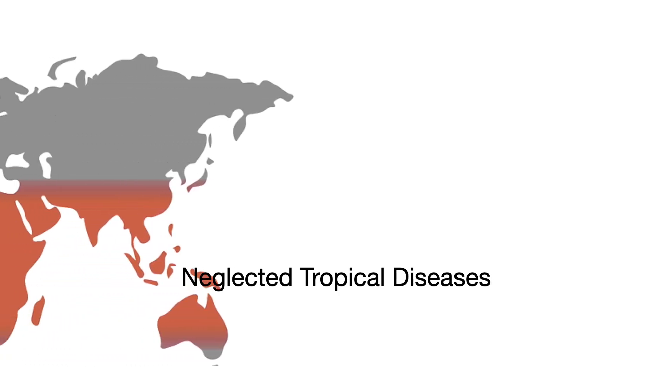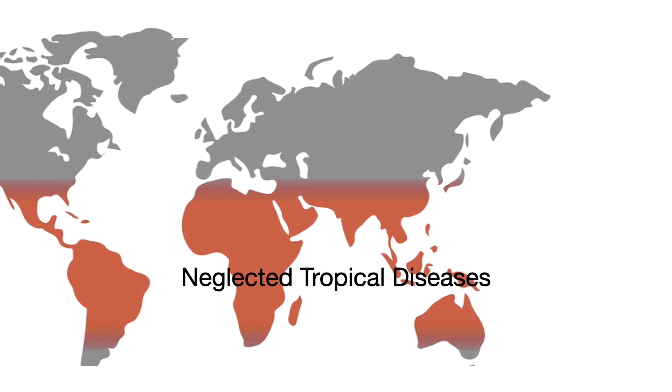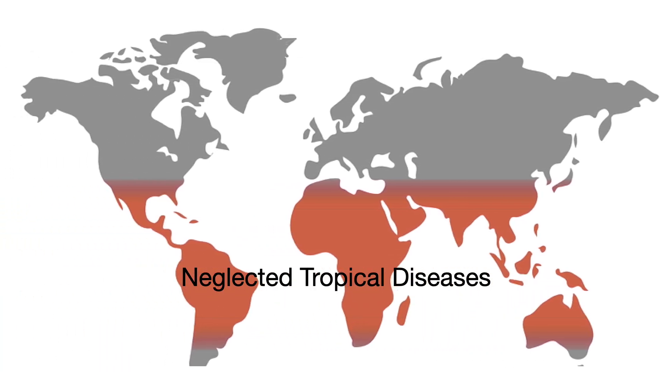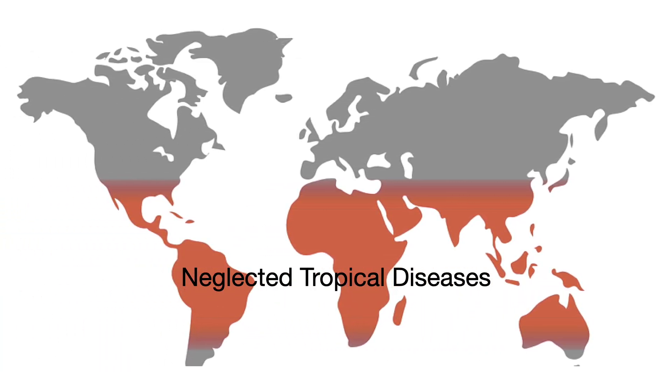Teniasis and cysticercosis are part of the neglected tropical diseases, a group of infectious diseases plaguing tropical and subtropical regions, especially people living in poverty without adequate sanitation. They are neglected because they generally get less treatment and research funding when compared to other better known infectious diseases such as HIV-AIDS and malaria.